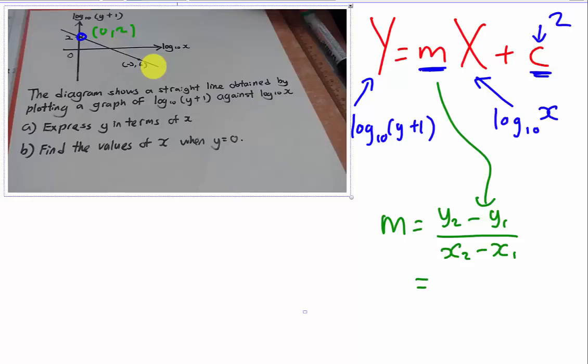So I can call this one is y2 minus y1, which means 6 minus 2, and then over x2 negative 2 minus x1 which is 0. So I will have 6 minus 2 over negative 2 minus 0. This is how we find the gradient. So basically you have 4 over negative 2 which is the gradient is negative 2.